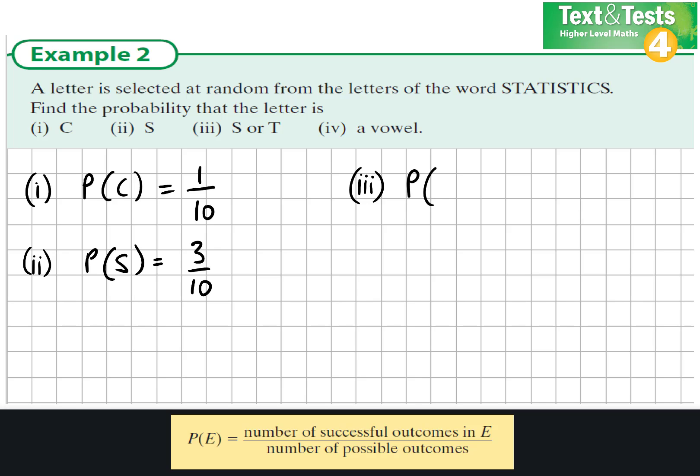Part 3. Work out the probability it would be an S or a T. We could work out the probability of S and then work out the probability of T and add the two answers together. Or I could just look at the picture here and see there are 3 S's and there are 3 T's. So there is a 6 out of 10 chance I choose an S or a T. This reduces down to 3 out of 5 in its simplest form.